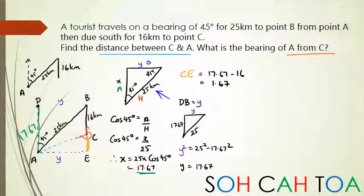Now I've got that bottom triangle sorted out. When I say the bottom triangle, I'm looking at AEC. So the gold part I figured out is 1.67, AE is the same as DB which is y which is 17.67. So now I can actually look at the question and say I'm looking for the distance AC.